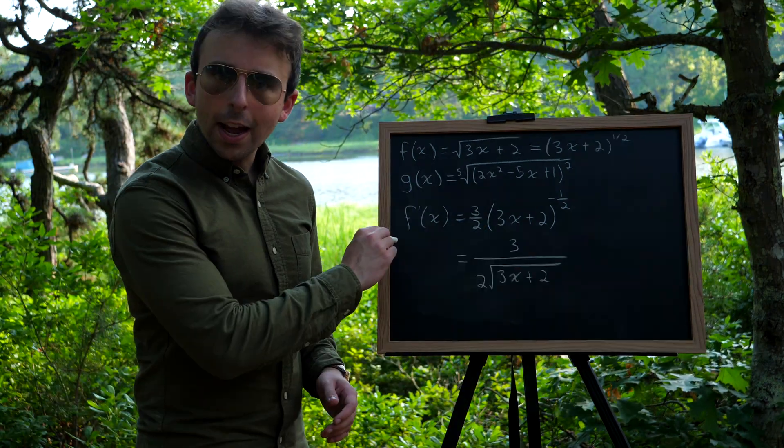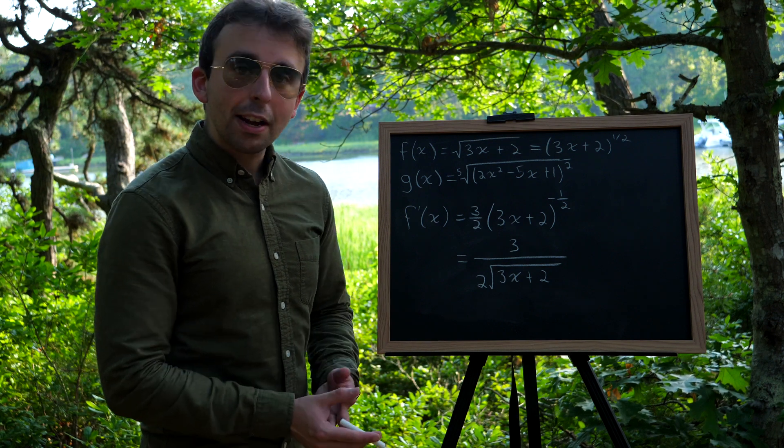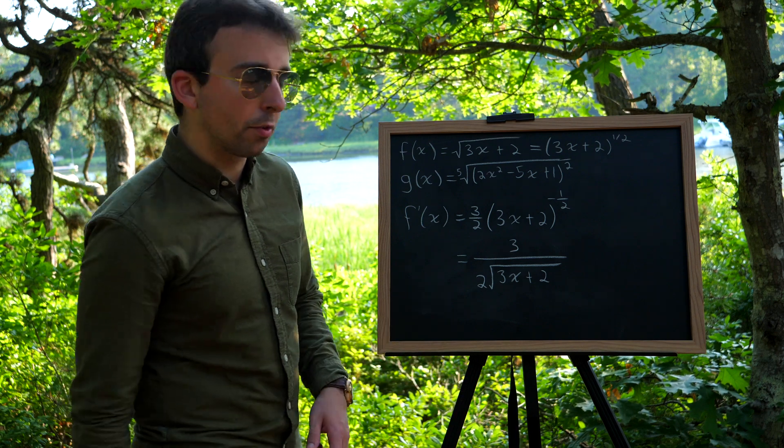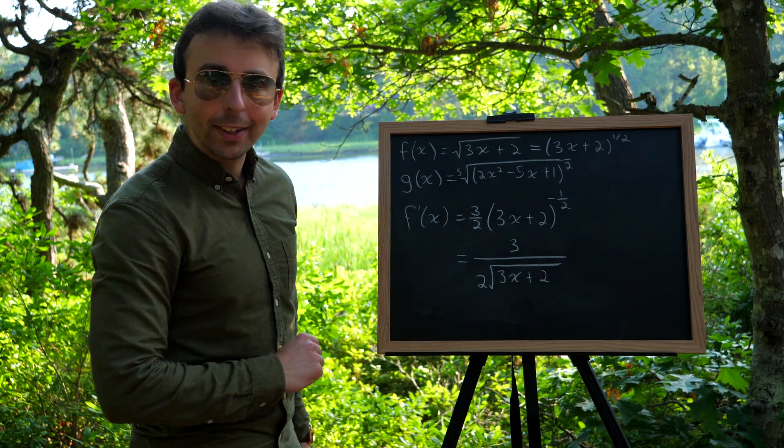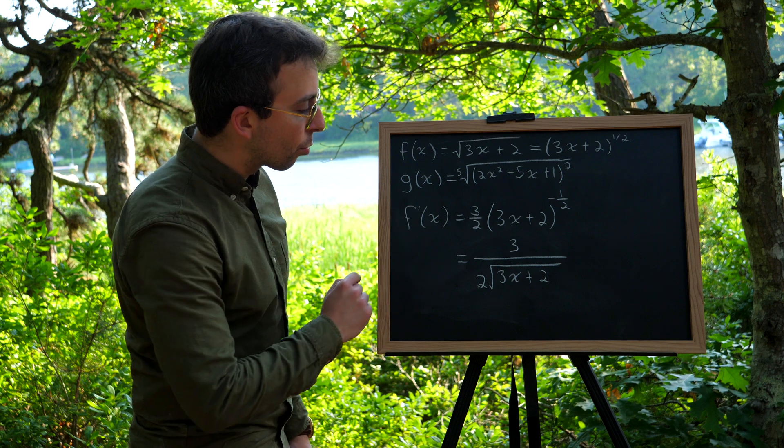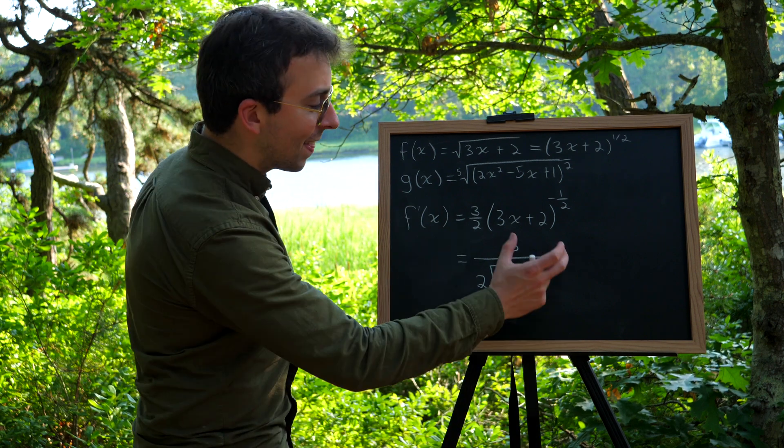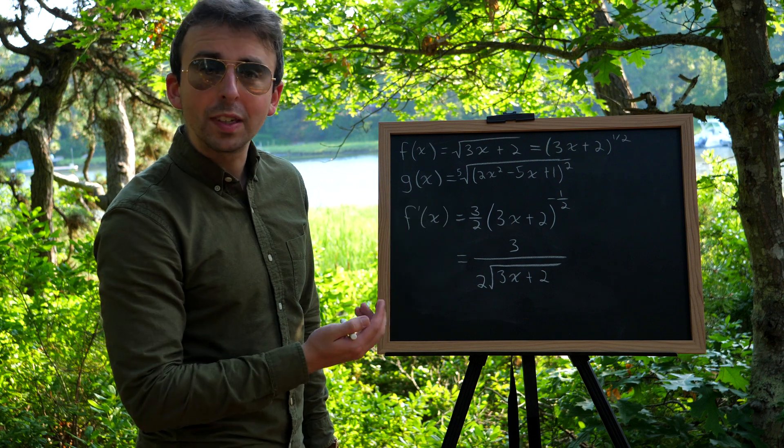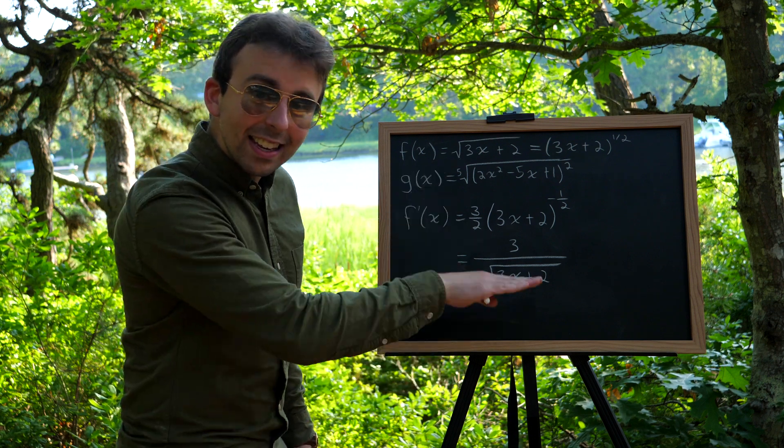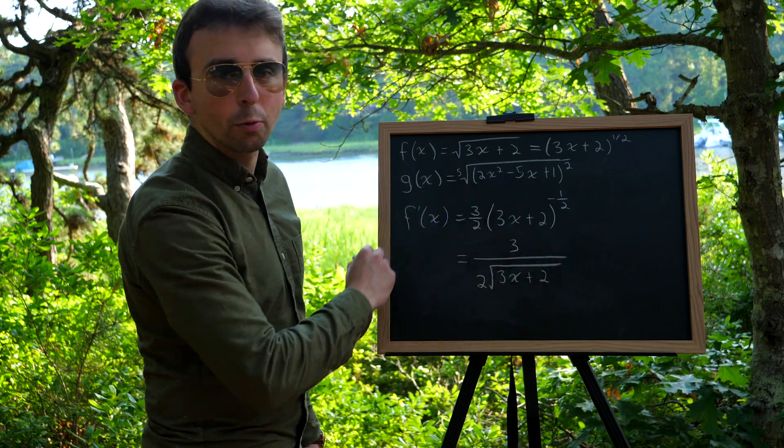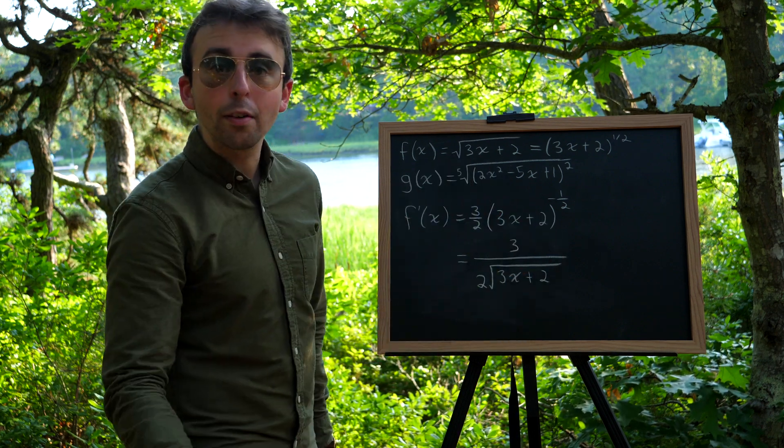You may prefer to write f prime without the negative exponent and also without fractional exponents, putting things back in terms of radicals. And that would look like this. We still have the 3 in the numerator. We've got that 2 in the denominator. But then this guy to the power of negative half, that gets sent down to the denominator at a power of 1 half. Again, that is a square root. So that's just another way of writing f prime.